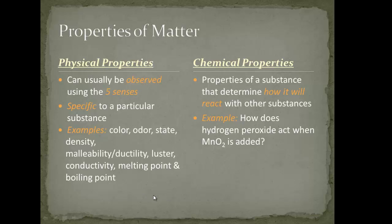Something to think about: how does hydrogen peroxide act when it comes in contact with manganese oxide? An equation might look something like this — it's not balanced — but what happens when you take hydrogen peroxide and manganese oxide and put them together? What new products are forming? That's the behavior of hydrogen peroxide and manganese oxide when those two things come in contact: what new thing is being produced?